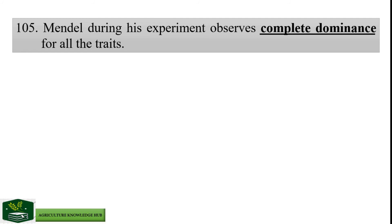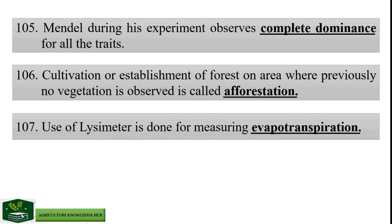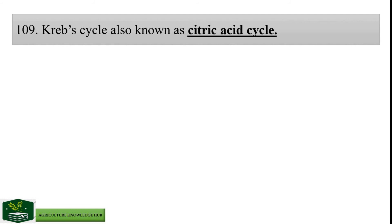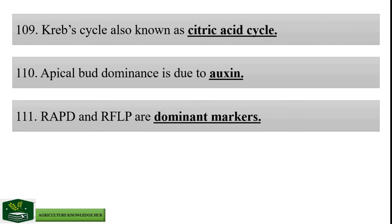Cultivation or establishment of forest on area where previously no vegetation is observed is called afforestation. Use of lysimeter is done for measuring evapotranspiration. Discharge rate of water through pipe is measured by venturimeter. Krebs cycle is also known as citric acid cycle. Apical bud dominance is due to auxins. RAPD and RFLP are dominant markers.